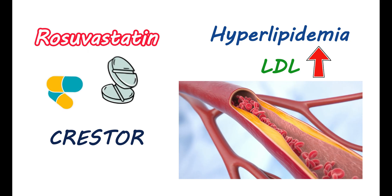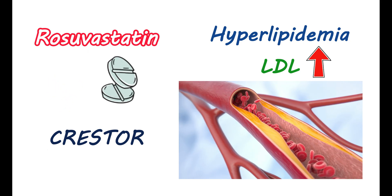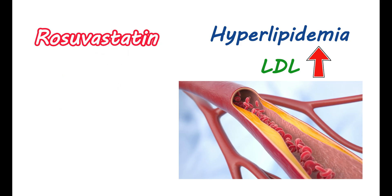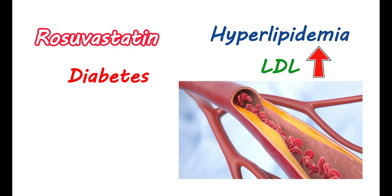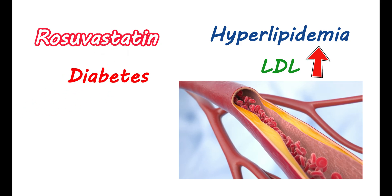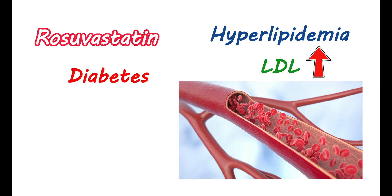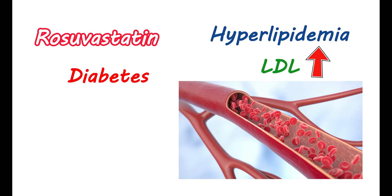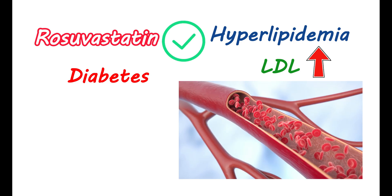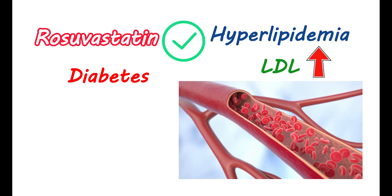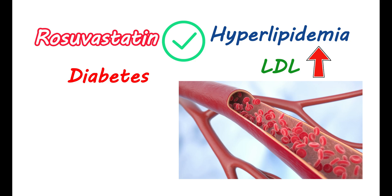Rosuvastatin can be used for prevention in people in high-risk groups. If you have diabetes or a family history of cardiovascular disease, a statin should be used to control the cholesterol levels. In such conditions, rosuvastatin can be the right option due to its high potency.